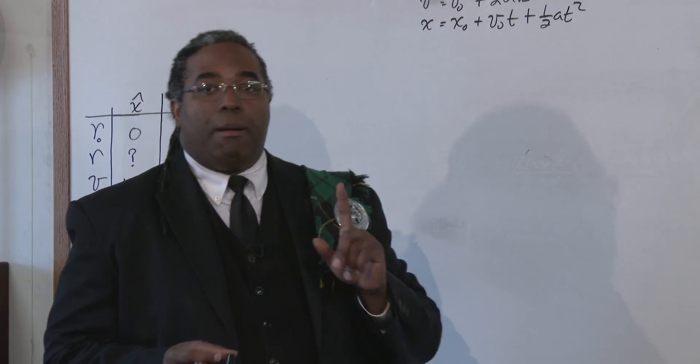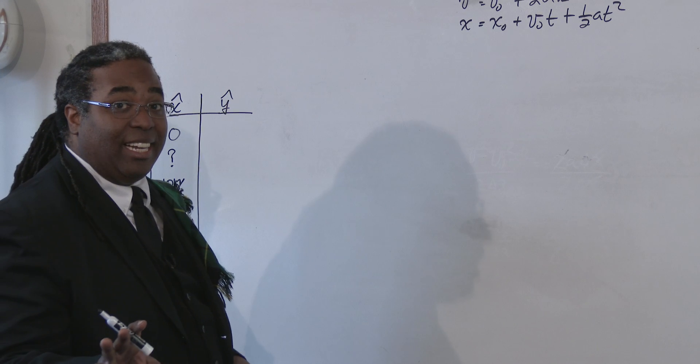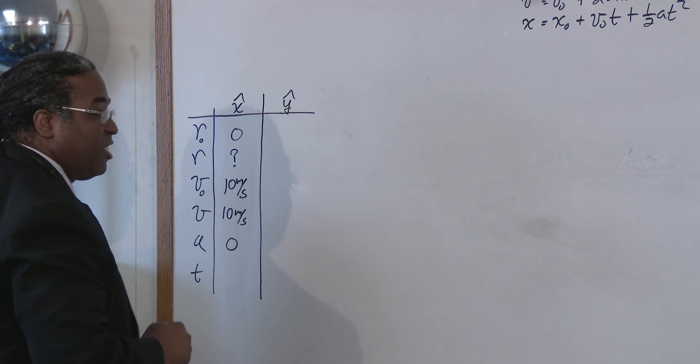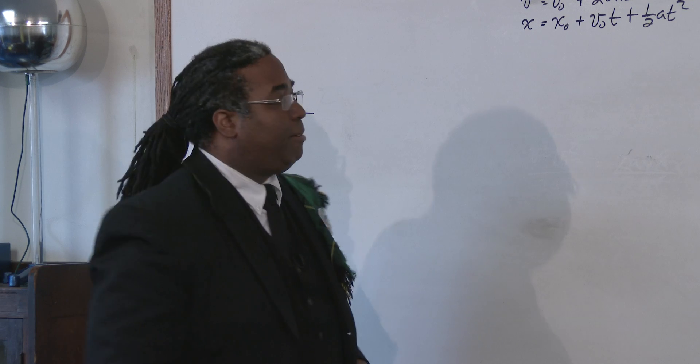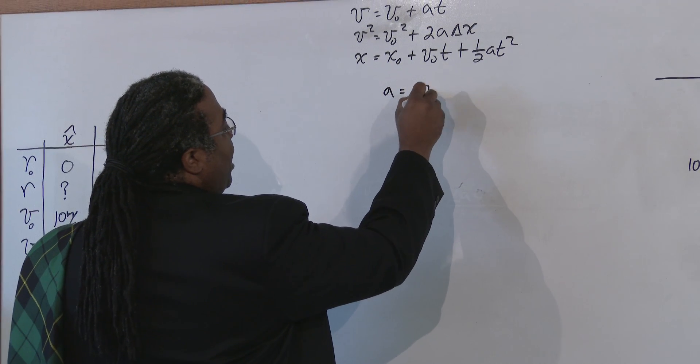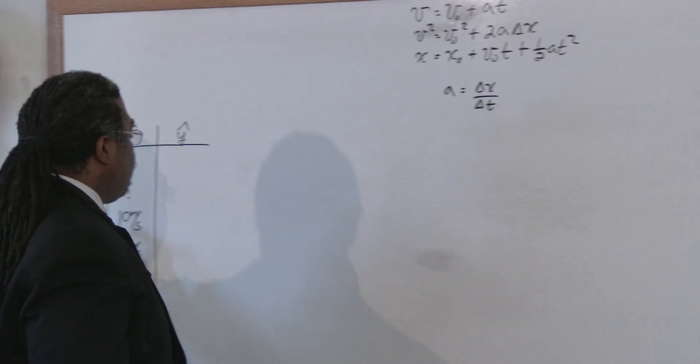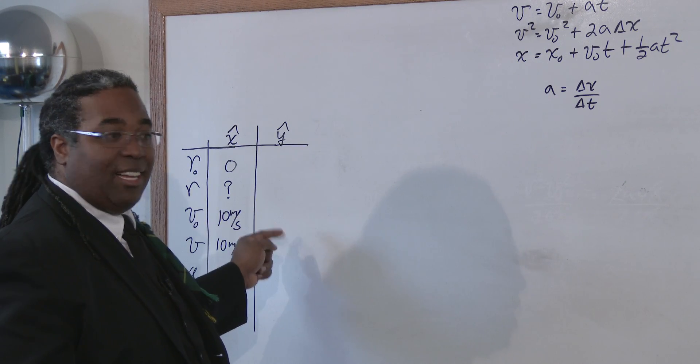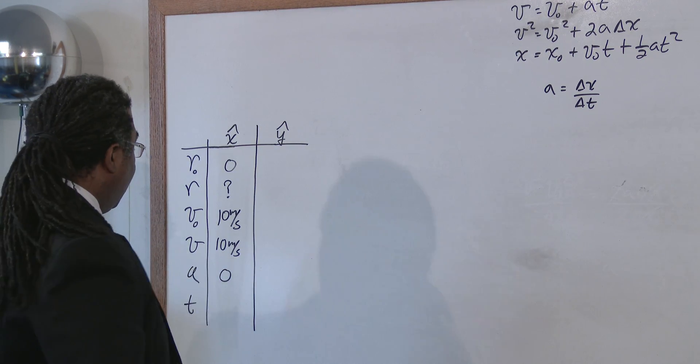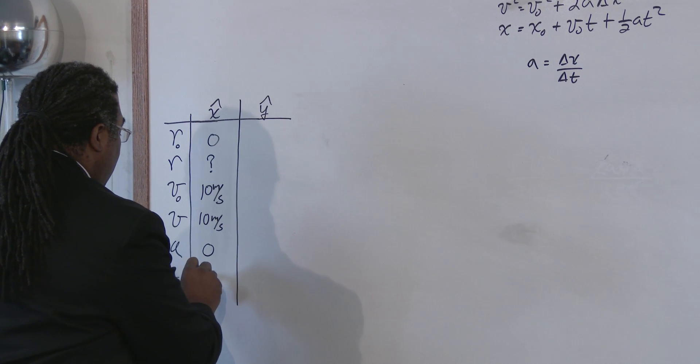But, that also tells us, without having to be told explicitly, that tells us that our acceleration in the x direction is zero. Because remember, acceleration is defined as change in velocity with respect to time. If there was no change in the velocity, then there can be no acceleration. Do we know the time? No we don't. We were not told the time so we'll just put a question mark.